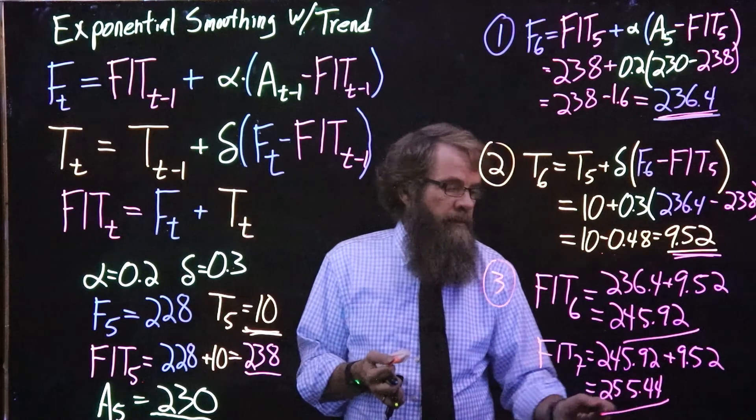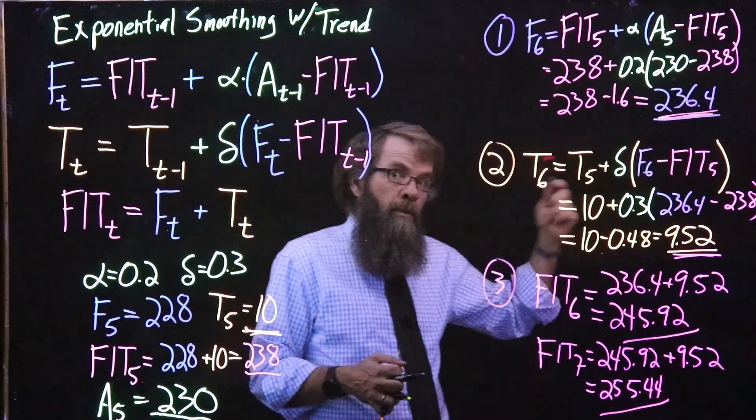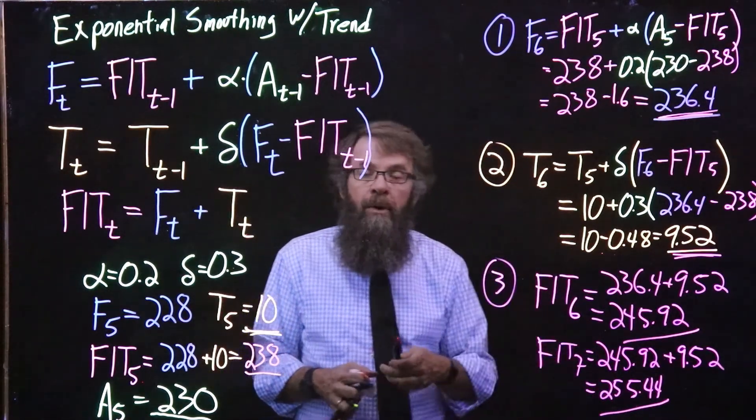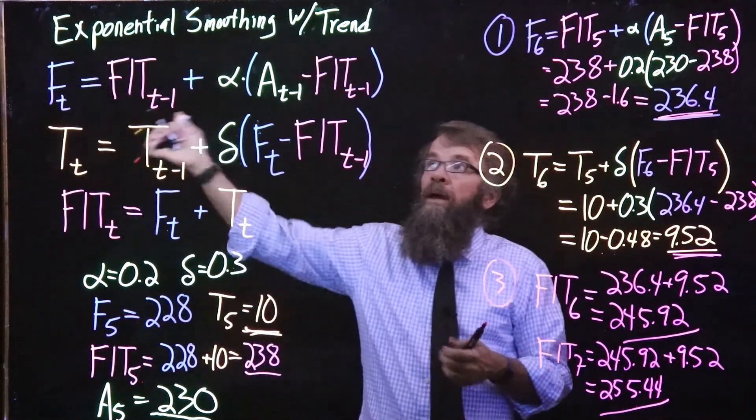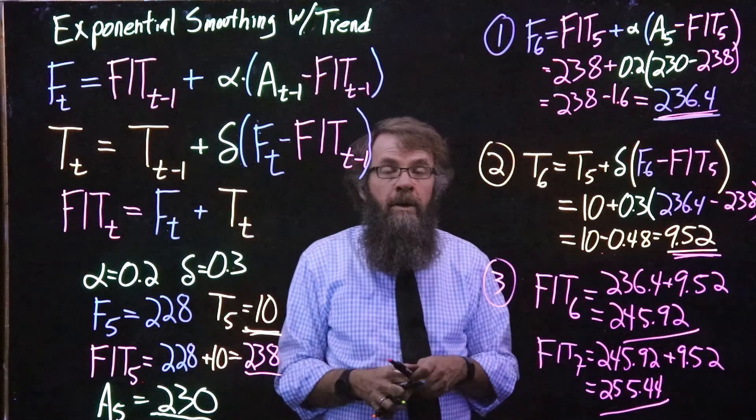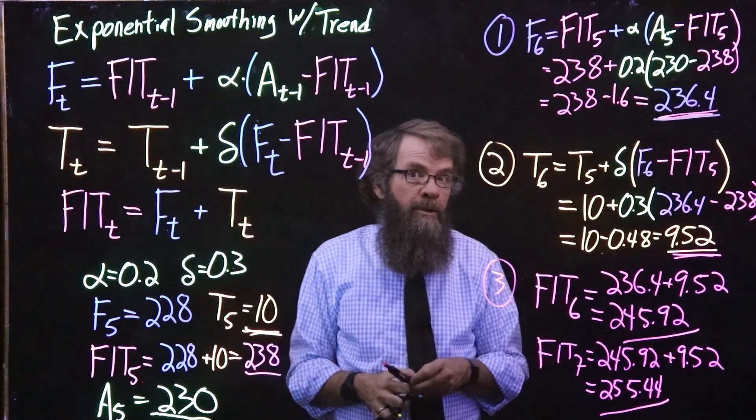So if your boss asks you what's the forecast for period 6, we can give it to them, and if they ask us for the period 7 forecast, we can give it to them, and if they want to know further into the future, just add more periods worth of growth on, and that's how we get the answer. So there was exponential smoothing with the trend, also known as double exponential smoothing.